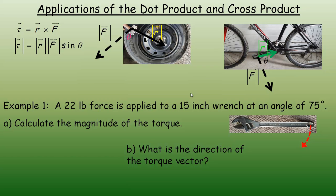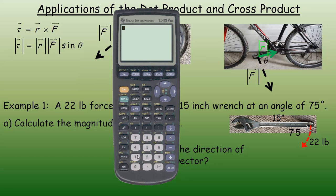In example number one, a 22 pound force is applied to a 15 inch wrench at an angle of 75 degrees. The 22 pound force is being applied here at an angle of 75 degrees. Now torque is often measured in foot pounds, so I'm going to convert the 15 inches to feet by dividing by 12. So 1.25 feet will be the length of my R vector.